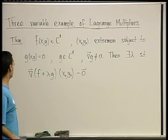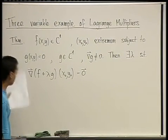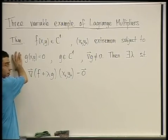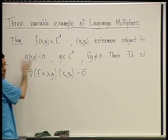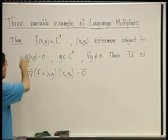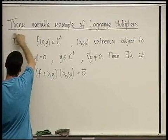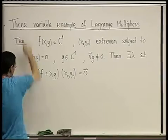What we want to do now is a three-variable example of Lagrange multipliers. Here's the theorem — I want to modify it. Everything changed so far was the two written here to three.